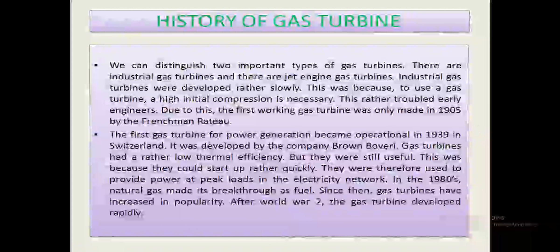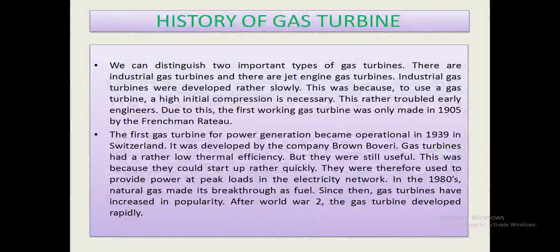History of gas turbine. We can distinguish two important types of gas turbines: industrial gas turbines and jet engine gas turbines. Industrial gas turbines were developed rather slowly, because a high initial compression is necessary, which troubled early engineers. The first working gas turbine was made in 1905 by the Frenchman Rateau. The first gas turbine for power generation became operational in 1939 in Switzerland, developed by the company Brown Boveri. Gas turbines had a rather low thermal efficiency, but were still useful because they could start up quickly and were used to provide power at peak loads in the electricity network.